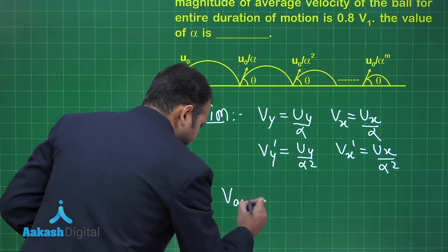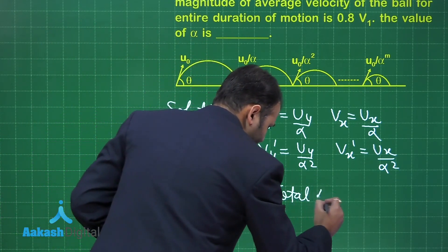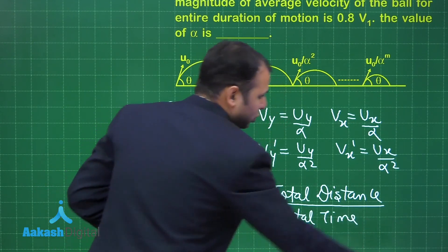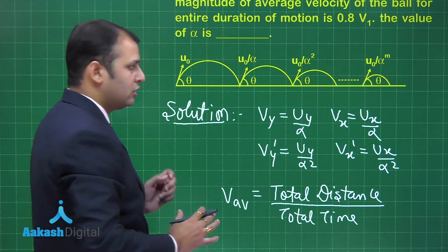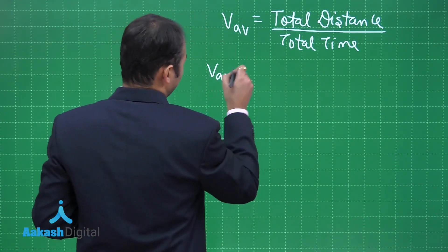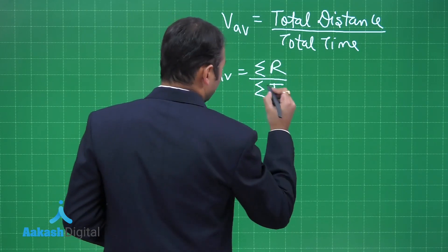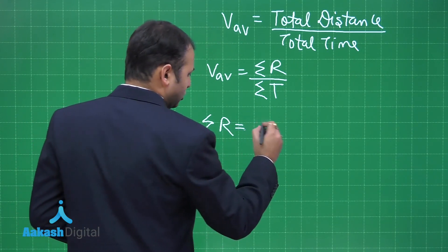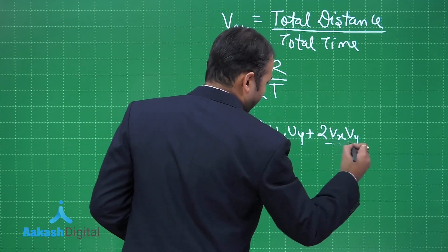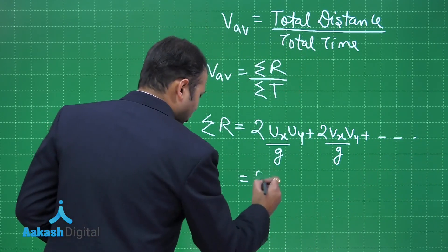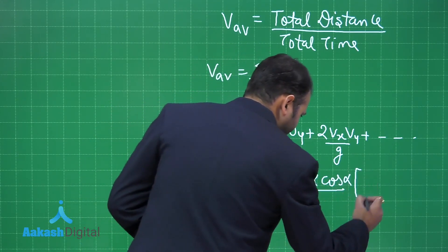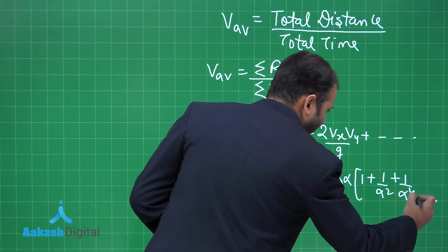For the average velocity, we write total distance by total time. The total distance is the summation of all the ranges. The average velocity equals the summation of all the ranges divided by the summation of all the time of flights. The summation of all ranges gives 2u_x u_y by g, plus 2v_x v_y by g, and so on to infinity. Taking common terms, this becomes 2u naught squared sine theta cos theta by g, multiplied by the series (1 plus 1 over alpha squared plus 1 over alpha to the fourth, and so on).